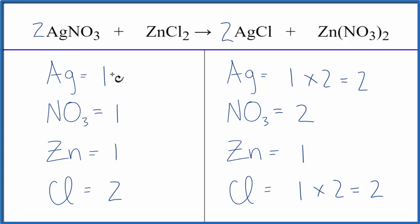So we have one times the two for the silver, that balances the silvers, and because we have one nitrate ion here, one NO3 times the two, that also balances our nitrates.